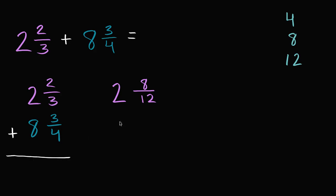And then we can do the same thing down here. Eight and three fourths is going to be the same thing as eight and something over twelve. Well, to go from four to twelve in the denominator, you multiply by three. So we have to multiply the numerator by three as well. Three times three is nine.